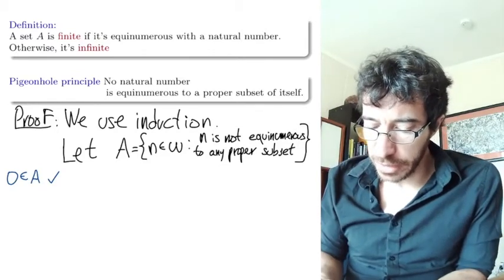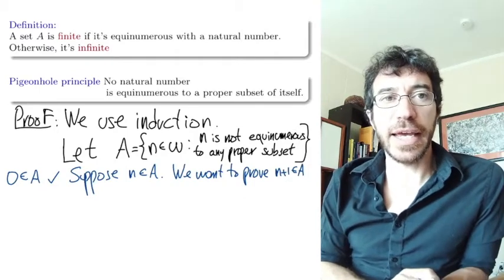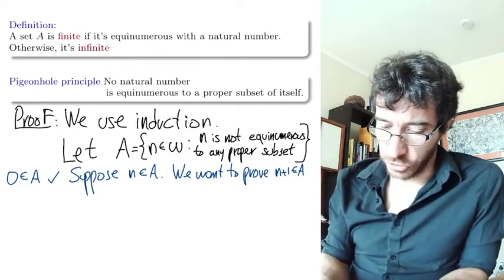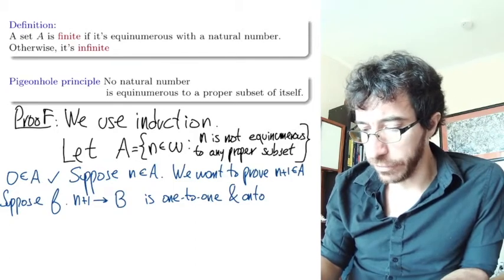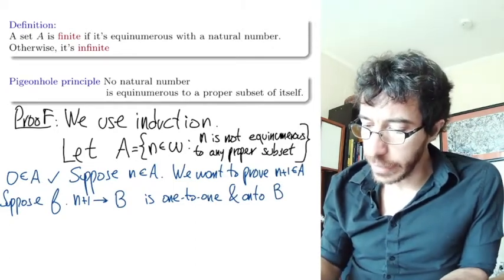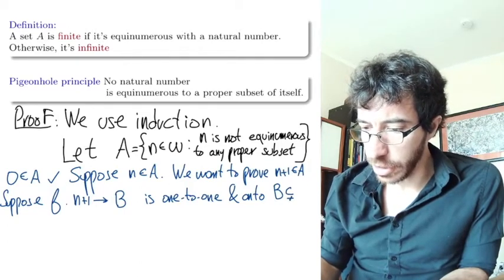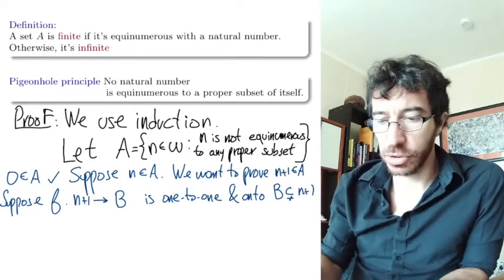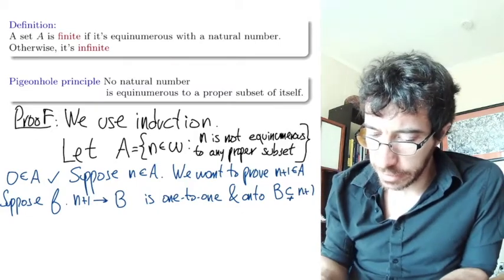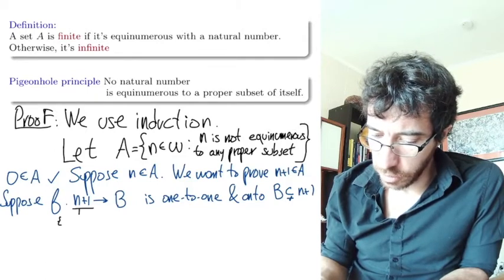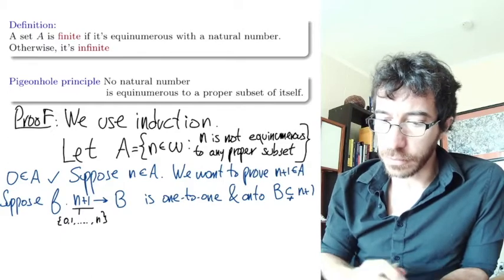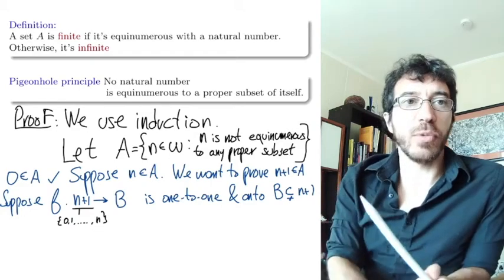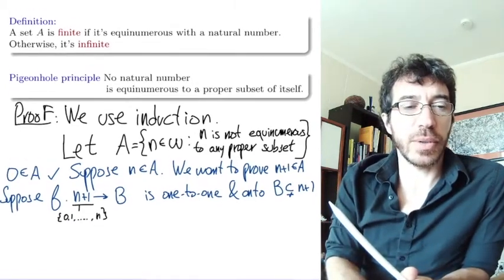Now suppose n belongs to A; we want to prove n+1 also belongs to A. To show something is in A, we must show there is no bijection between it and a proper subset. So suppose for contradiction that we have a function f that is one-to-one and onto a set B, where B is a proper subset of n+1, meaning B is included in but not equal to n+1.